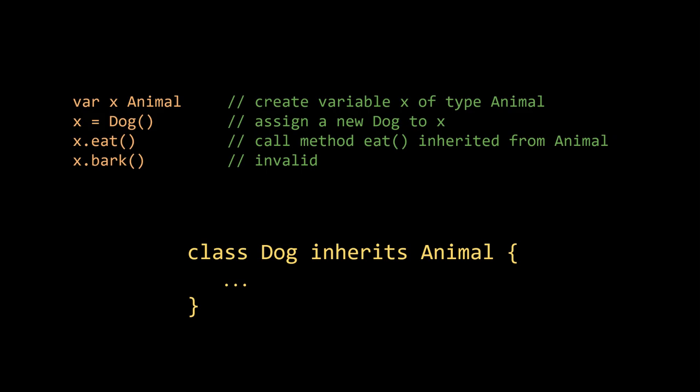If we create a variable X of type Animal, we can assign a dog value to X because a dog is a kind of animal. Assuming Animal has a method eat, we can call this method on X, and the dog value stored in X will be passed into the call. However, assuming dog has a method bark that it doesn't inherit from Animal, we cannot call bark on X because the compiler knows X to be an animal, not specifically a dog. We may happen to know that X is currently storing a dog, but the compiler only knows that it stores some animal. As a rule, the compiler never presumes to know the value of anything, because in most cases it can't know.